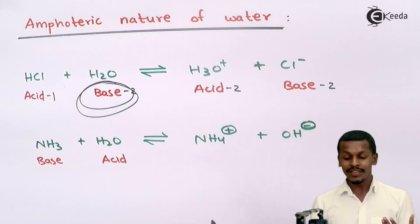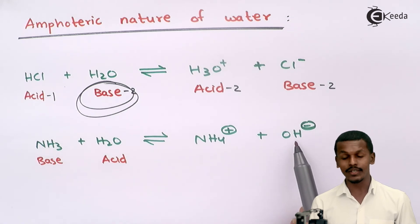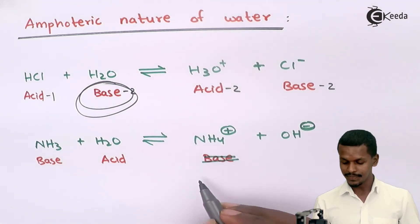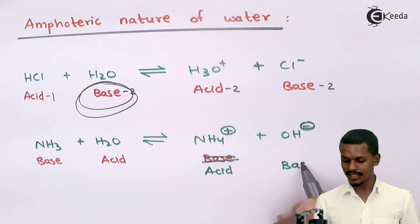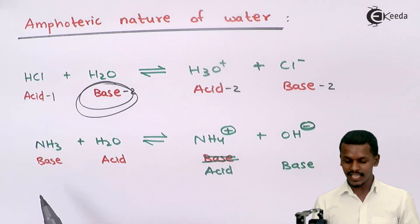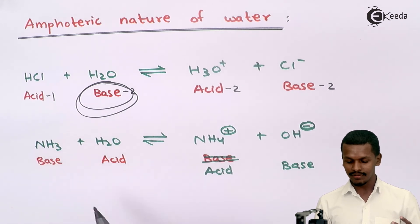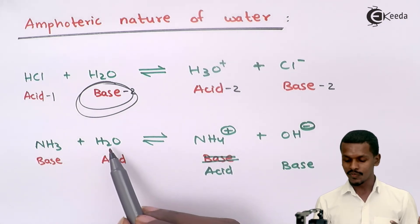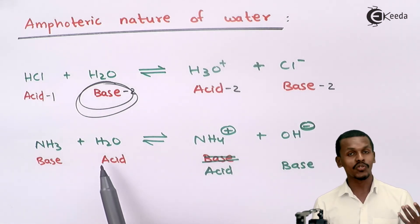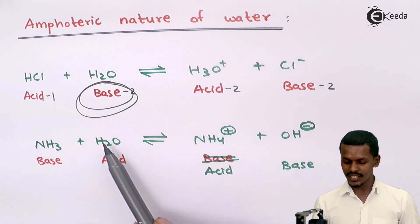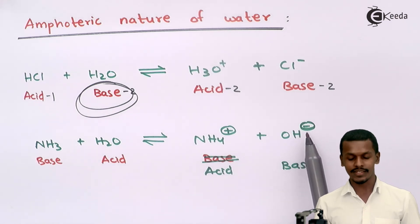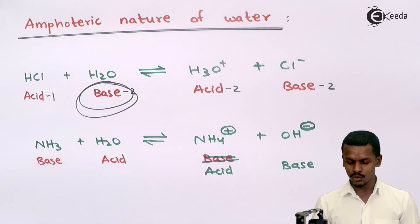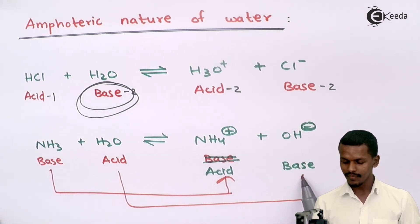NH₃ has been converted into NH₄⁺ by accepting a proton. Now NH₄⁺ has the capacity to donate its proton to OH⁻ or to another substance, so it will act like an acid while OH⁻ will act like a base by accepting the H⁺ ion. Therefore, NH₄⁺ is the conjugate acid of the base NH₃, and OH⁻ is the conjugate base of the acid H₂O. Both pairs — NH₃/NH₄⁺ and H₂O/OH⁻ — differ by one proton H⁺, making them conjugate acid-base pairs.